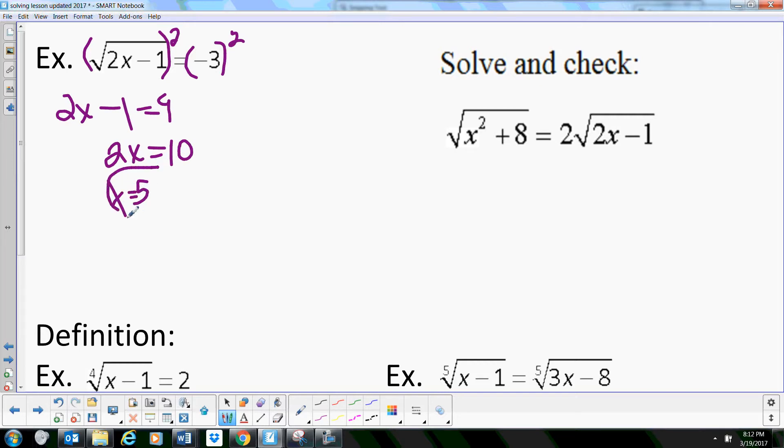Now let's check this one. When we plug it in, we get the square root of 2 times 5 minus 1. That's 10 minus 1, which is 9. So, the square root of 9—is that negative 3? The answer is no. The square root of 9 is 3.